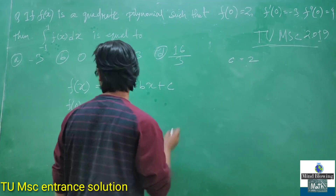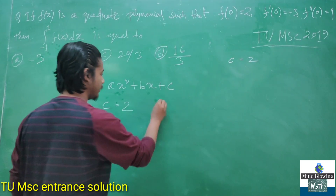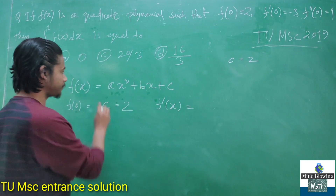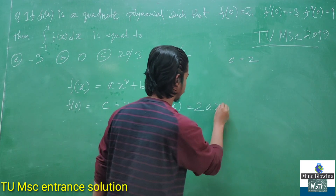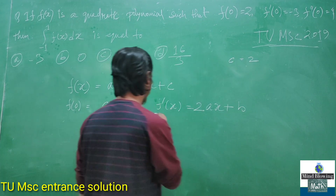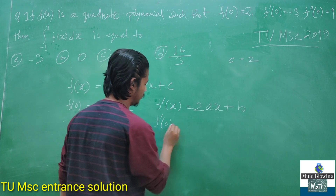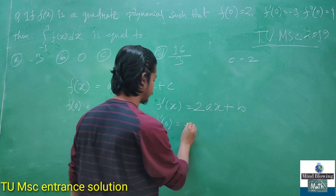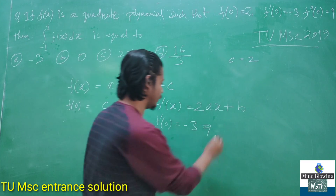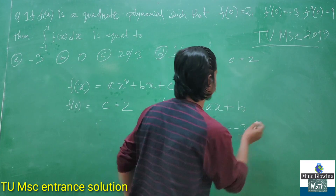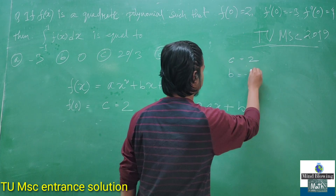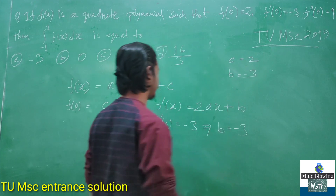Now, f'(x) is nothing but 2ax + b. Given f'(0) = -2, whenever x = 0 this term implies b = -2. So we get another constant value of b equal to -3.